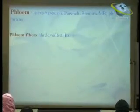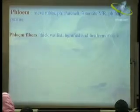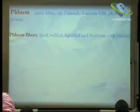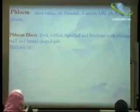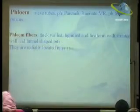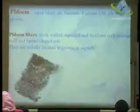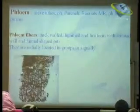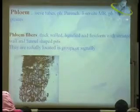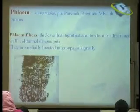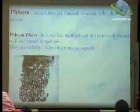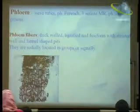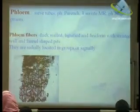A phloem becomes a sea of tubes — phloem parenchyma in three series of double arrays with flowing fibers. The most important thing in the Cinchona bark is its flowing fibers. In the transverse section they are radially arranged, lignified.